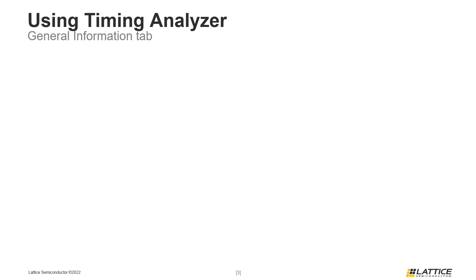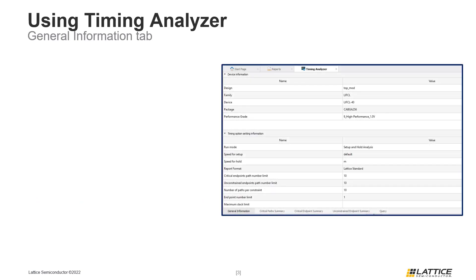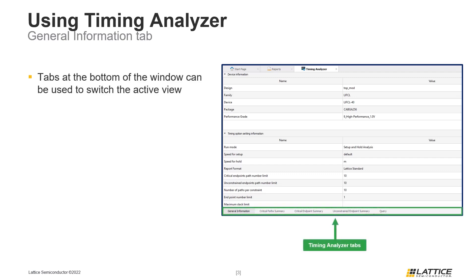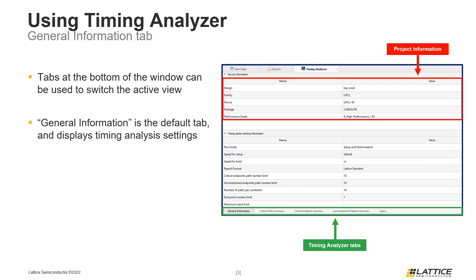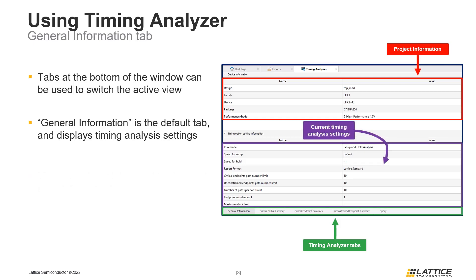Once Timing Analyzer has launched, a window like the figure on the screen should appear. The Timing Analyzer tool consists of a few different sections. At the bottom of the window are the Timing Analyzer tabs, which contain information about the most critical paths in a design and can be used to switch the active Timing Analyzer view. The default tab is called General Information. At the top of the General Information tab is the General Project Information, which displays information about a project like the selected device, package, and speed grade. Underneath the Project Information section are the Timing Analysis settings.